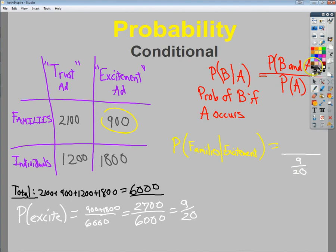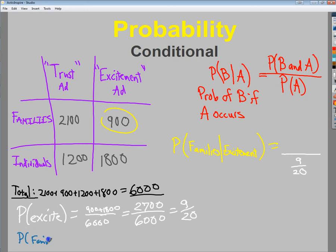On the other side of it, what's the chances of doing B and A together? So what's the probability that you'll be a family and choose excitement? Well, in that case, I'm dealing with 6,000 different responses and only 900 of those responses fell into that subgroup. So 900 over 6,000 should reduce down to 3 over 20.